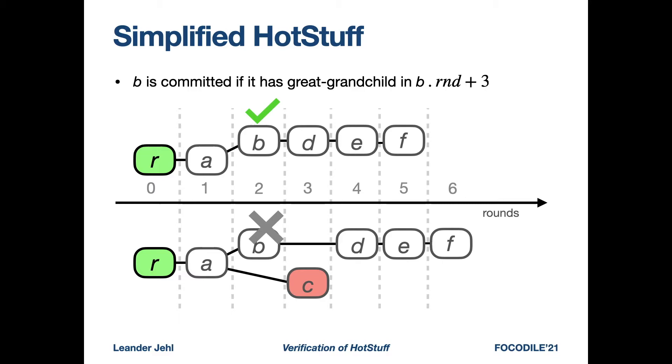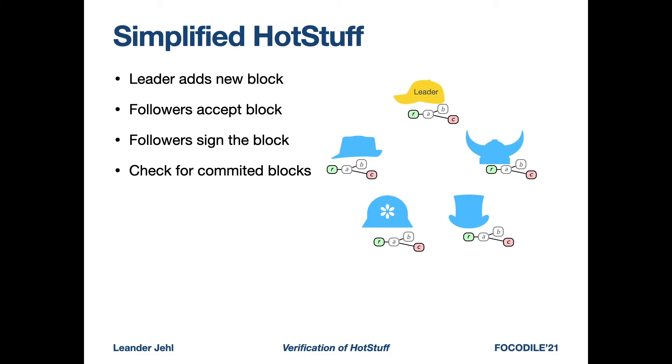Here is another figure. In the lower tree, F is also a great grandchild of B, but the round of F is 6. So here B is not committed.